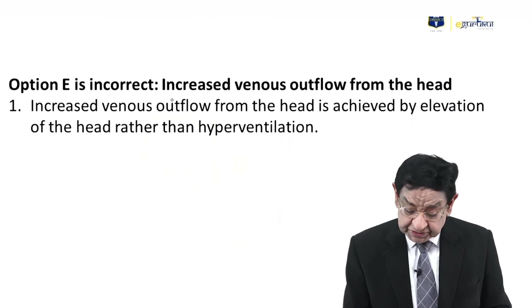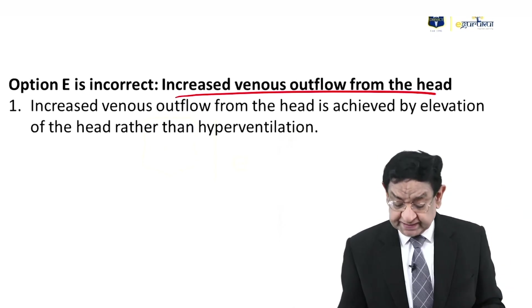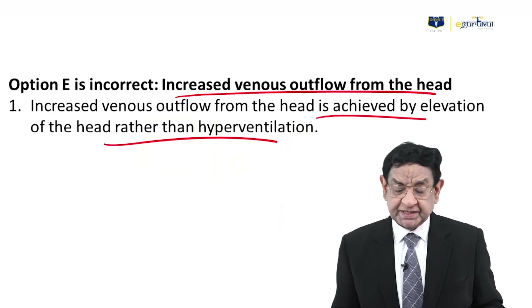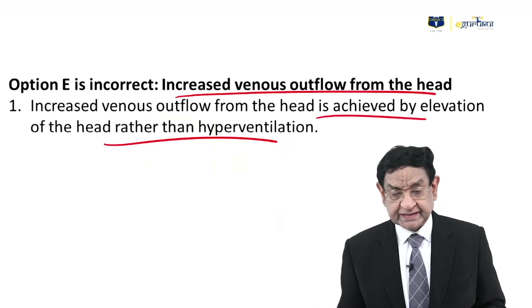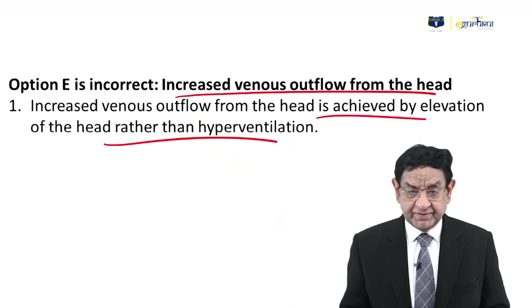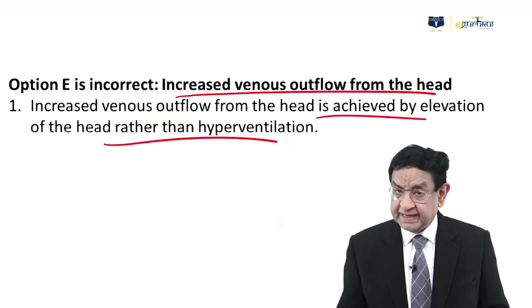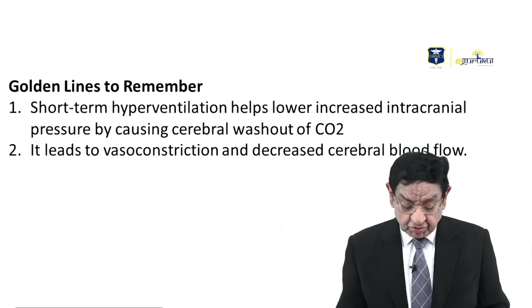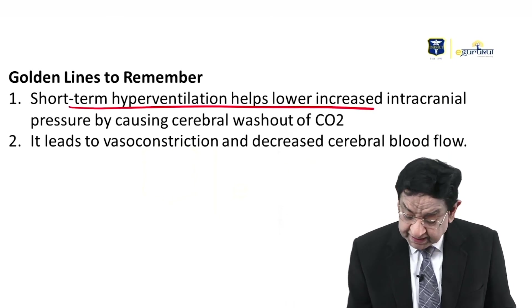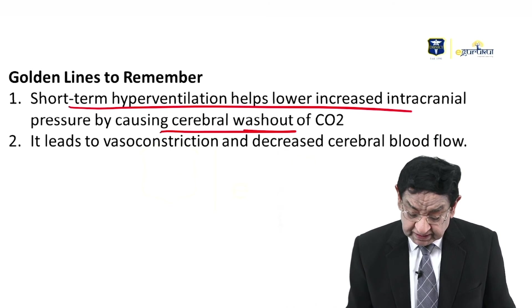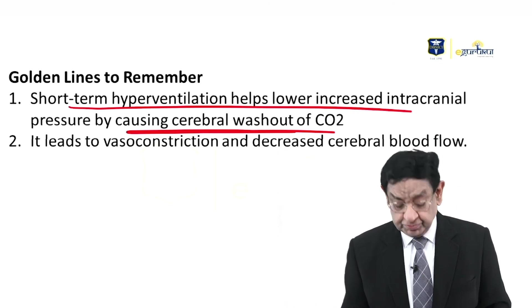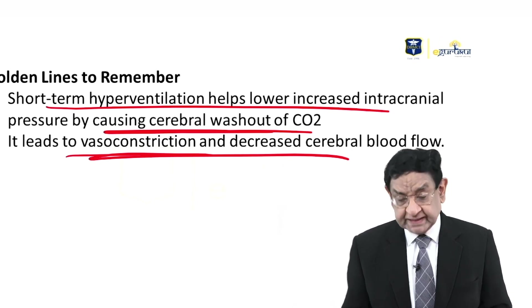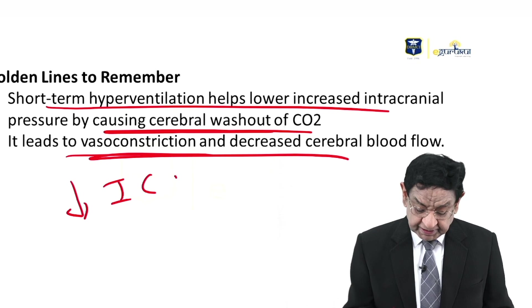Increased venous drainage is achieved by raising the head end — which, remember, was already being done in our patient. Sedation was done and the head end was raised, so by the effect of gravity, blood drains out of the brain. The golden line to remember: short-term hyperventilation helps to lower ICP by causing washout of CO2, leading to vasoconstriction, which decreases cerebral blood flow and reduces intracranial pressure.